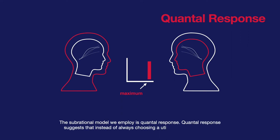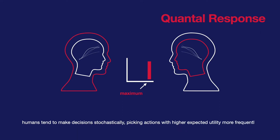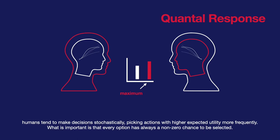Quantal Response suggests that instead of always choosing a utility-maximizing option, humans tend to make decisions stochastically, picking actions with higher expected utility more frequently. What is important is that every option has always a non-zero chance to be selected.